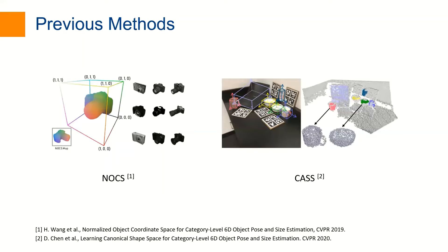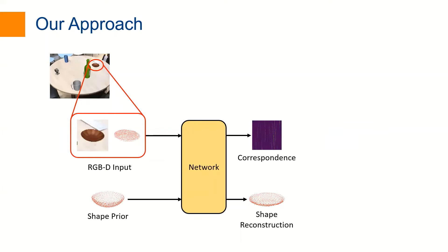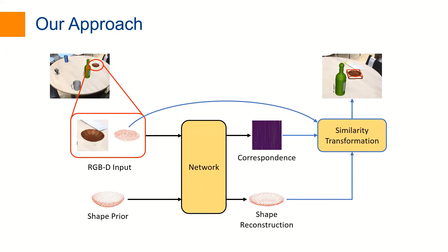We propose to jointly estimate the model and correspondence. For each object, our network takes the RGBD observation and the pre-learned shape prior as inputs. We construct the complete model and establish its correspondence with the depth observation. The 6D pose and size of the object are recovered by estimating an optimal similarity transformation.